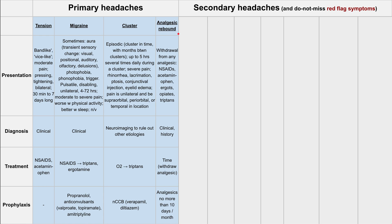Next are migraine headaches and cluster headaches. These are grouped together because they have similar pathophysiology — they're both caused by vascular problems and the blood supply leading to the head. Migraines sometimes present with an aura, which is a transient sensory change. This could be visual, such as a hallucination or a weird lighting effect. It could be positional — feeling like you're floating or falling. It could be auditory hallucinations or high-pitched noises. It could be weird smells, olfactory changes, or even delusions.